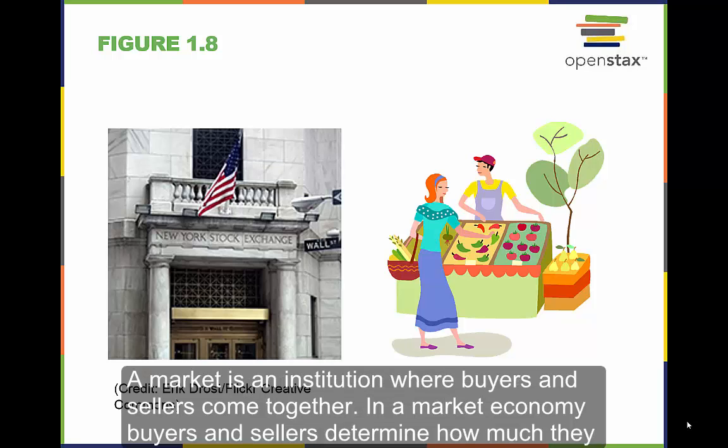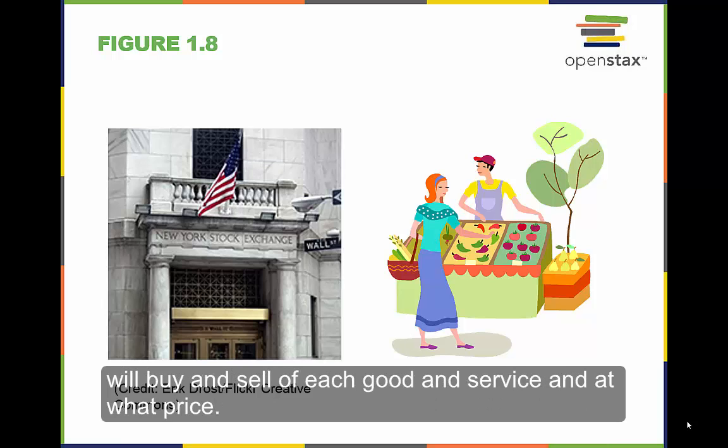A market is an institution where buyers and sellers come together. In a market economy, buyers and sellers determine how much they will buy and sell of each good and service, and at what price.